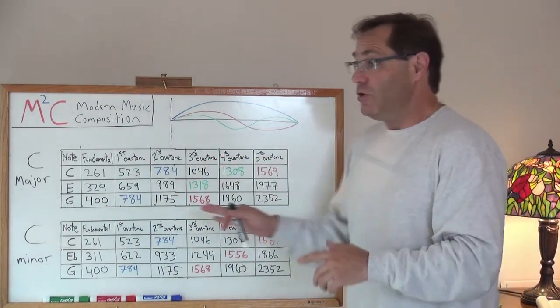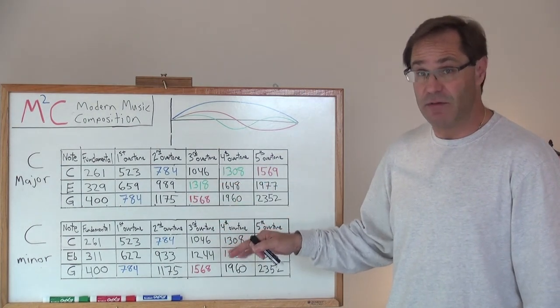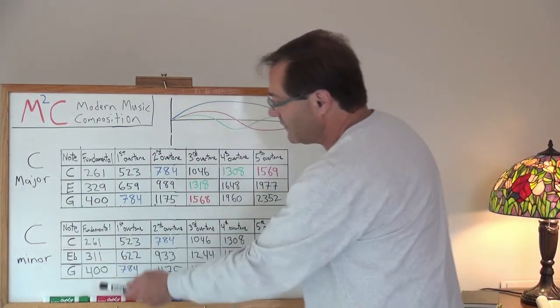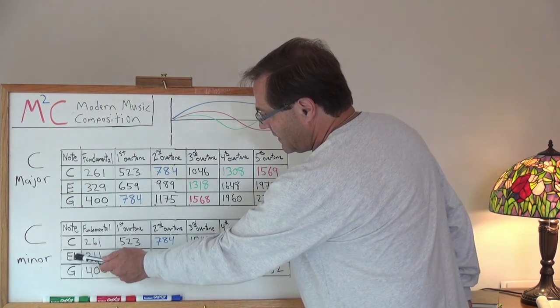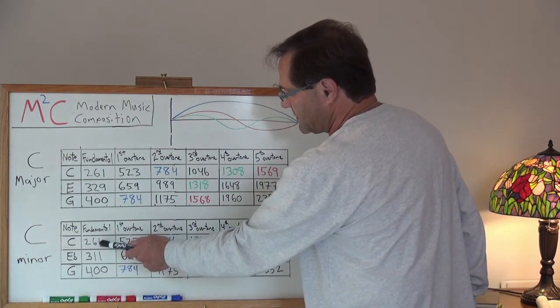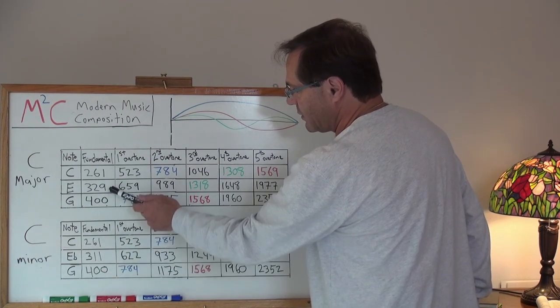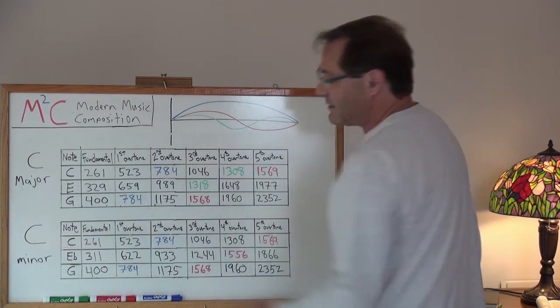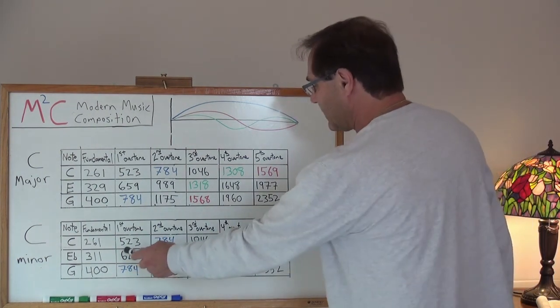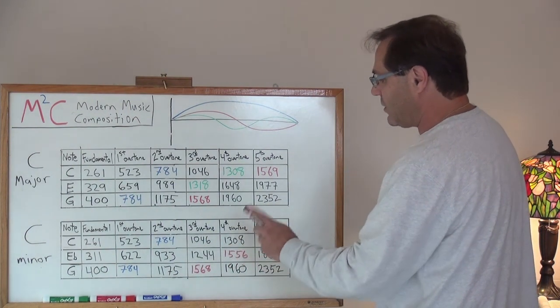Now, you don't have to perturb the system much to get a different sound. And I can show you that in looking at C minor. C minor is C, E flat, and G. Both these frequencies are the same, 261 and 400, except instead of it being E, it's E flat. So, we went from 329 hertz down to 311 hertz. Well, if we go and then we calculate the overtones for E flat, we notice one thing.